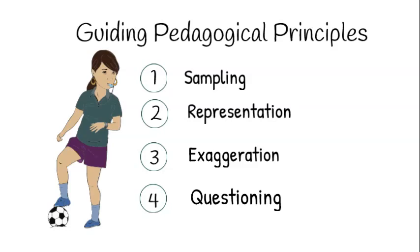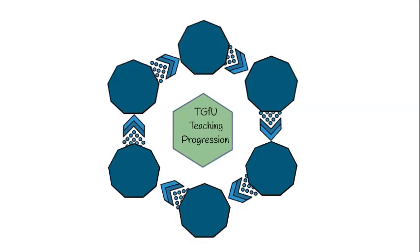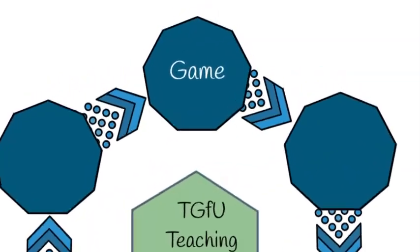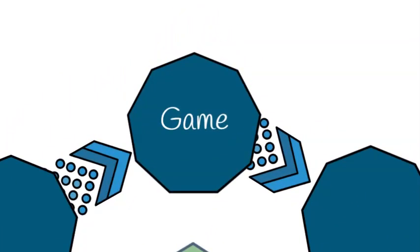Questioning can also lead to the question of how to perform movement in the context of play. These principles guide how the model is organized into a six-step cyclical process. The first step is the game. Learning begins with playing the game. This is perhaps the most important step and involves selecting a game that all students can play. Learners don't need to play the adult version of the game — the aim is to match the game with the abilities of the students. Use modified and small-sided games.